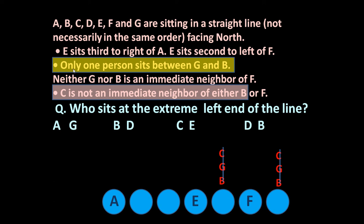Now let us read the two underlined statements again. Only one person sits between G and B. G and B cannot be neighbours of F. So G and B cannot occupy the positions immediately beside F. The remaining available positions for B and G are at the extreme left end of the arrangement.